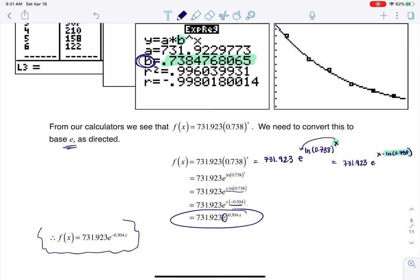So if I want to turn any regular base b—b being the one that your calculator gave you—if you ever want to turn that into base e, you can use the little e to the ln trick. And that comes up enough in math. So there we go. We've got our exponential model, base e, and we're all set with number 33.